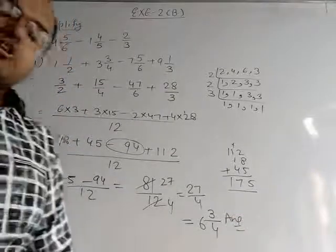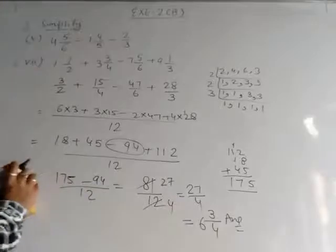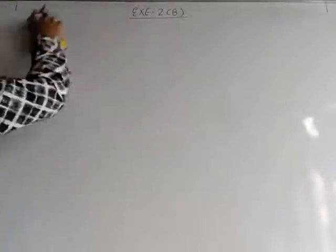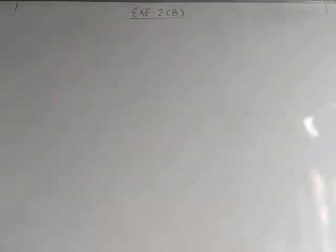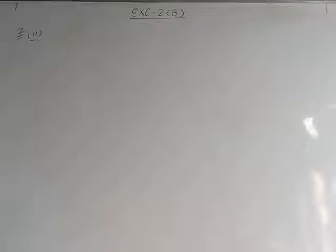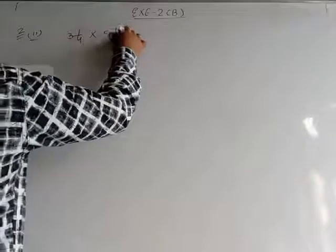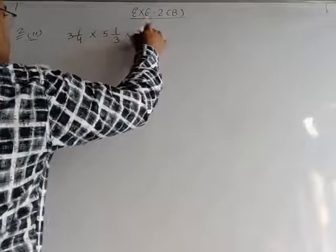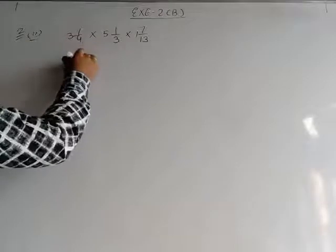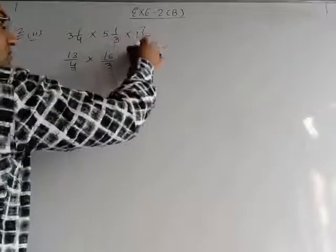So like this you have to do question number 1. Now come to question number 2, part number 2. The question is: 3 whole 1/4 multiply 5 whole 1/3 multiply 1 whole 7/13. First we convert the mixed fractions: 3 and 1/4 = 13/4; 5 and 1/3 = 16/3; 1 and 7/13 = 20/13.